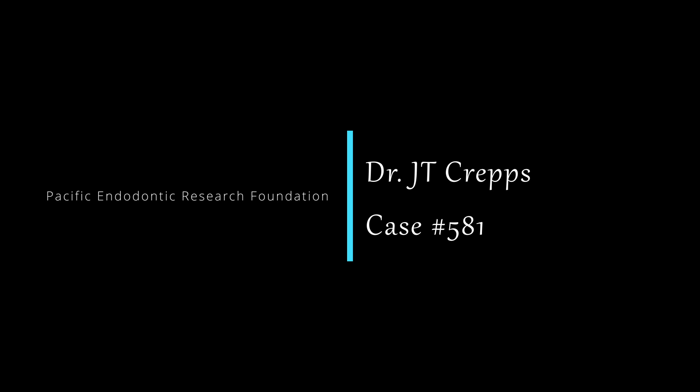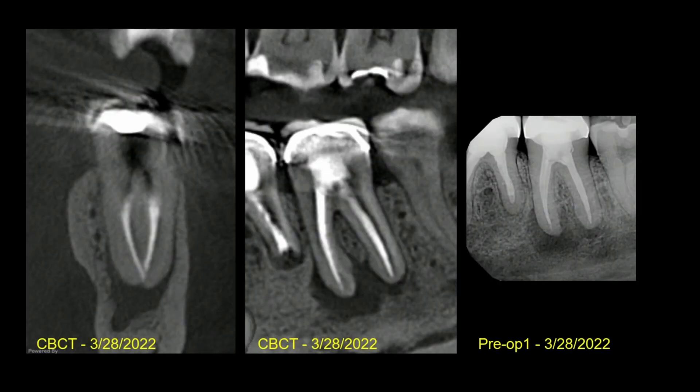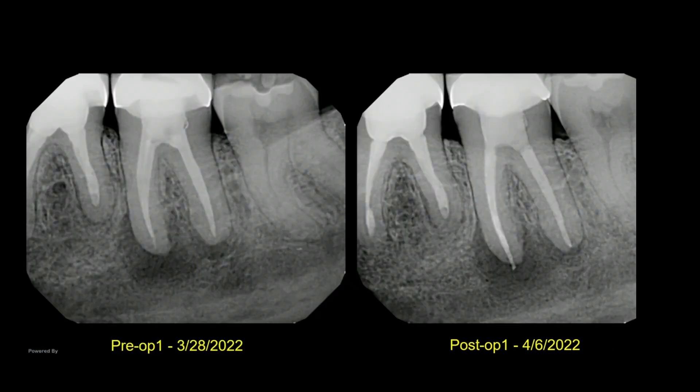This is the final report on J.T.'s case, retreatment case number 581. This was a prior root canal that J.T. retreated. There had been an apico on the first molar. These are his pre-op and post-op radiographs of the case.